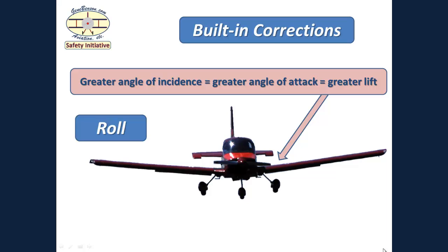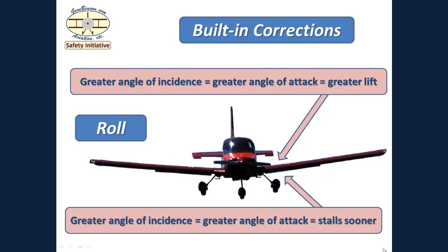As a roll correction to compensate for torque during cruise, the manufacturers often attach the left wing at a slightly higher angle of incidence than the right wing. That causes the left wing to always be flying at a slightly greater angle of attack than the right wing, and therefore be developing slightly more lift. This arrangement explains why many airplanes tend to drop off on the left wing during an aerodynamic stall. Since the left wing is at a slightly greater angle of attack, it exceeds the critical angle of attack and stalls before the right wing.